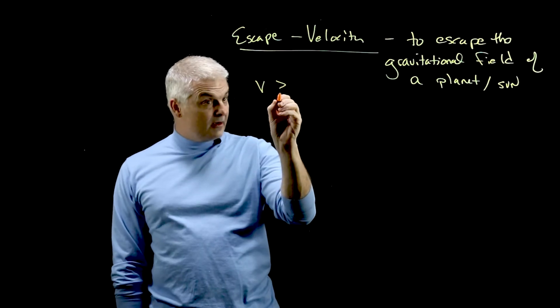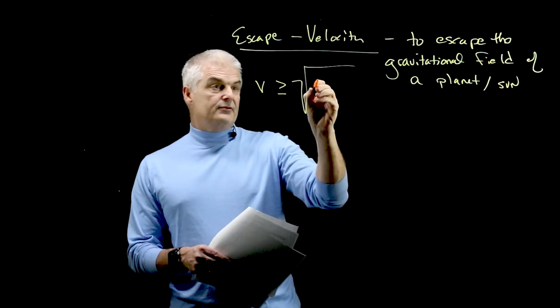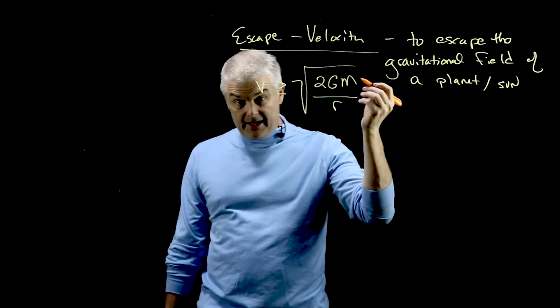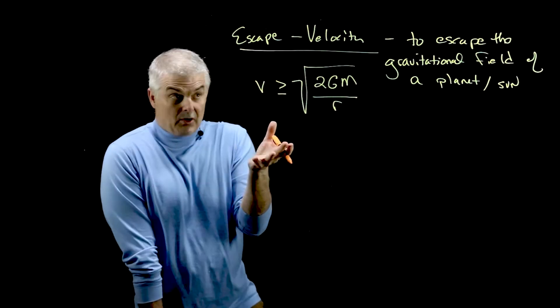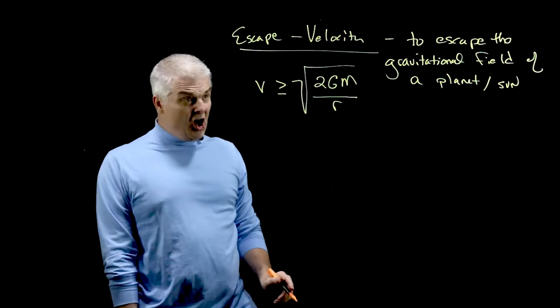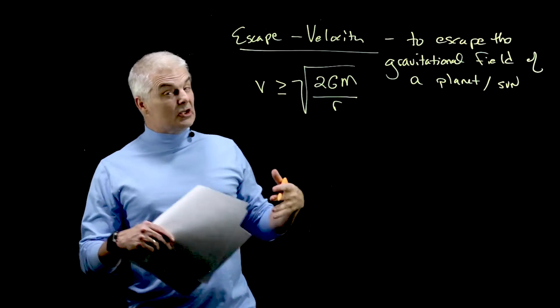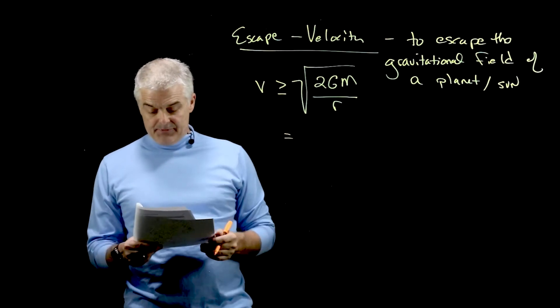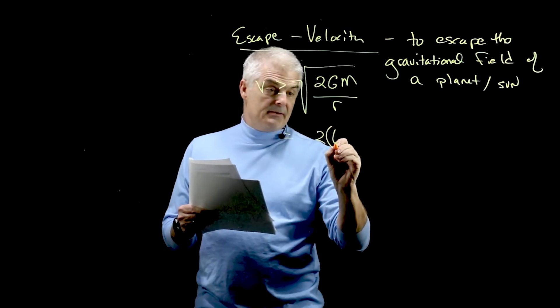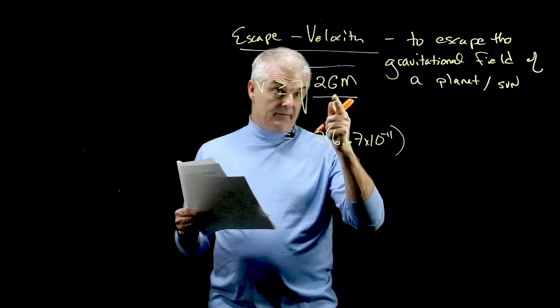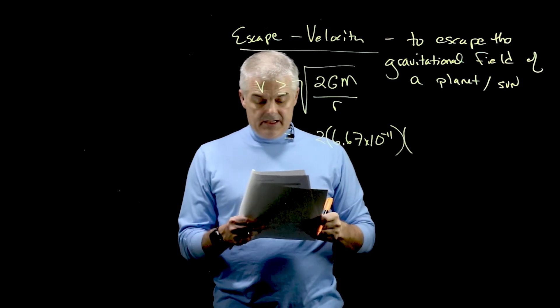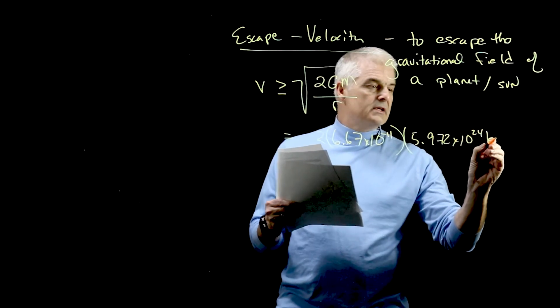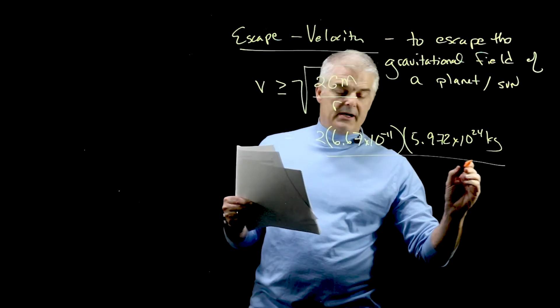V has to be greater than or equal to the square root of two g m over r, and m would be the mass of the planet, let's say the mass of the earth. The interesting question is, if I'm going to shoot a rocket up, how fast does it need to go to get it away from the earth so it can go to the moon or Mars? We'll plug in the problem. I'm going to take two times gravitational constant times mass of the earth, which is 5.972 times 10 to the 24th kilograms,